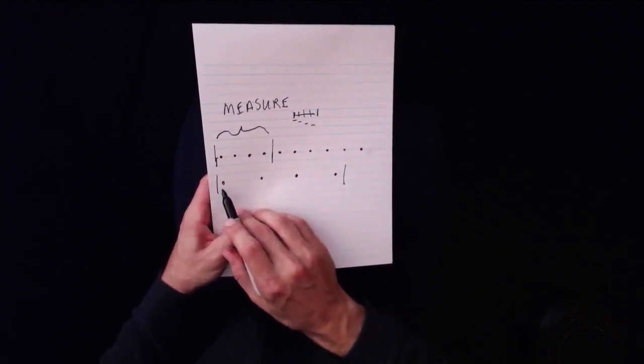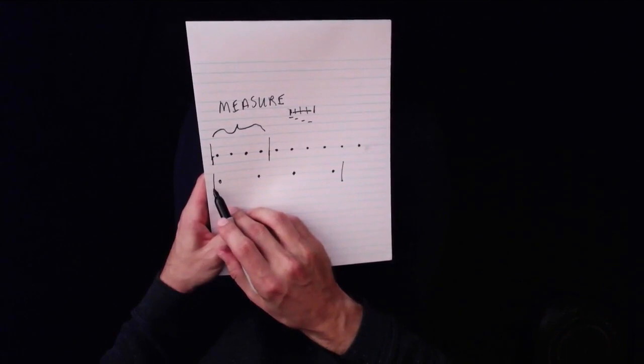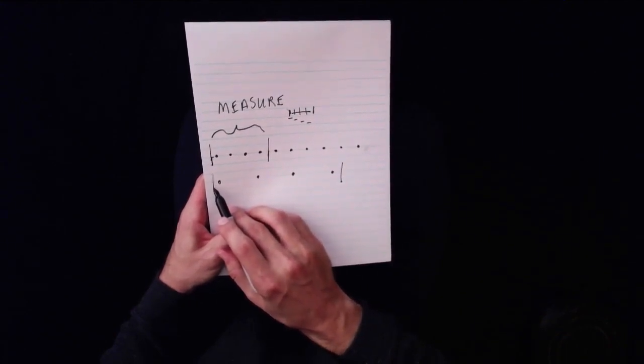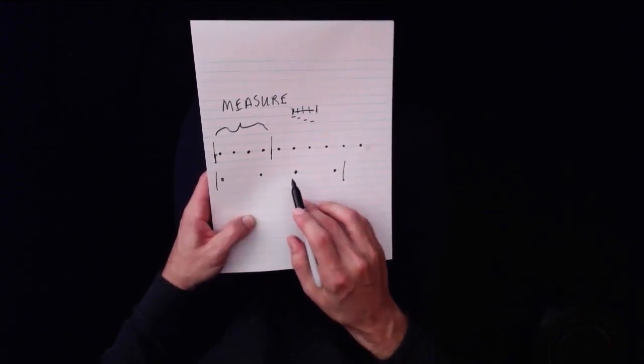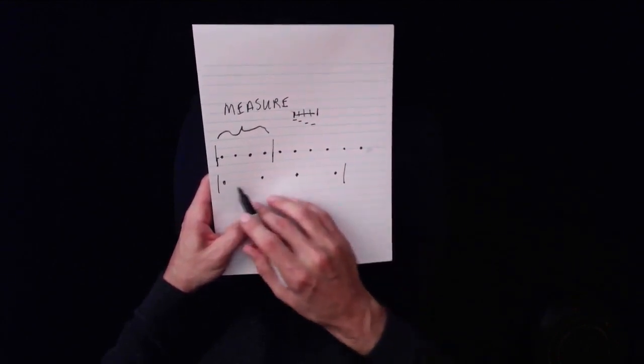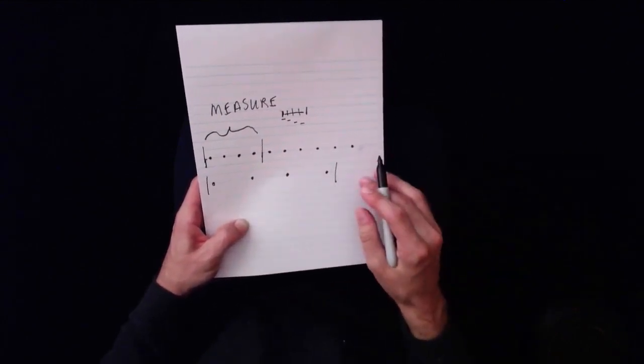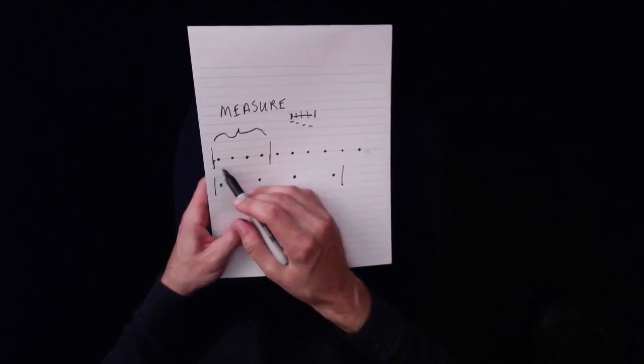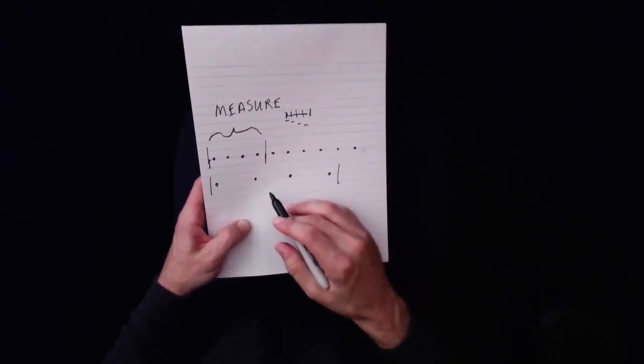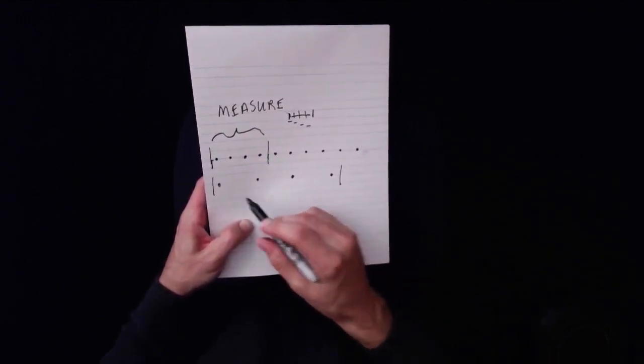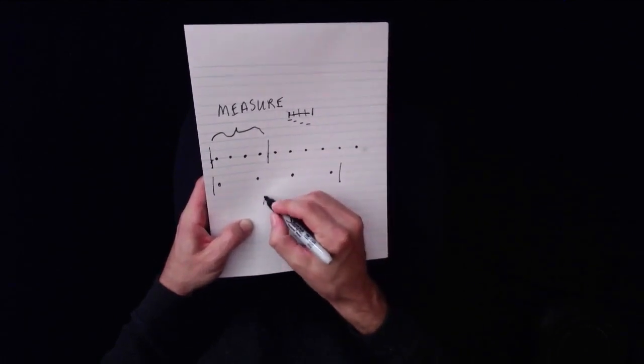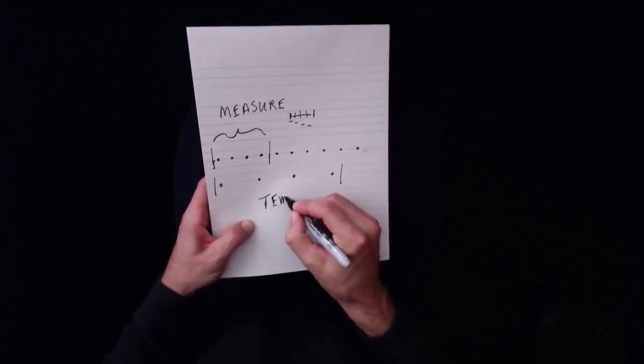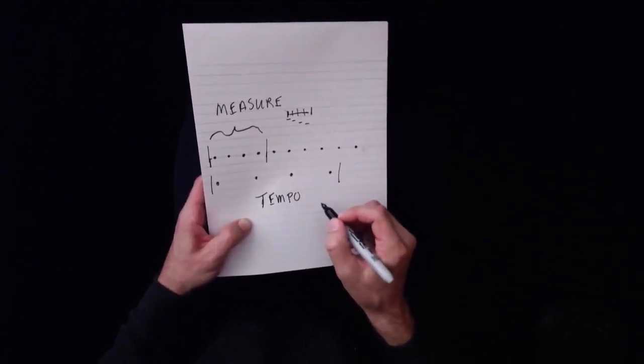If I start on this measure, and push my play button, these beats might sound like this. Boom, boom, boom, boom. Notice how the second measure feels a lot slower. And notice how the first measure feels a lot faster. In other words, in the second example, our tempo is slower.